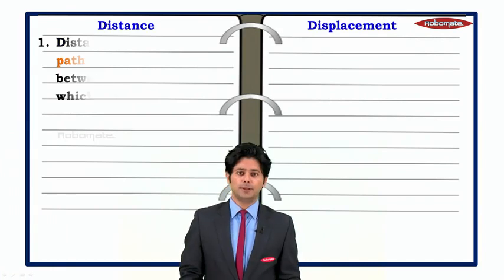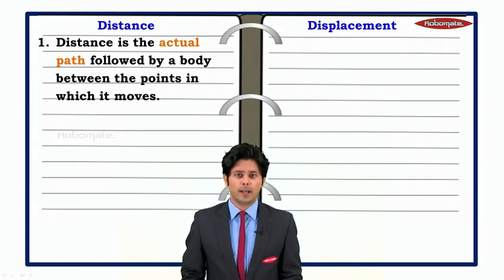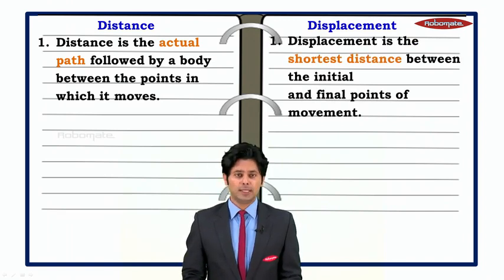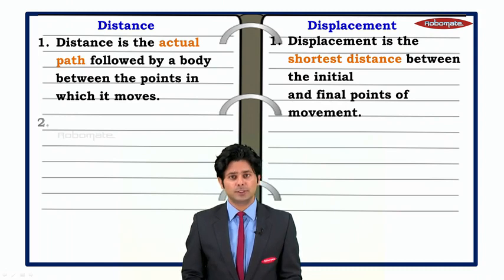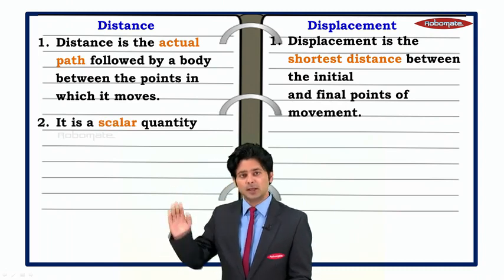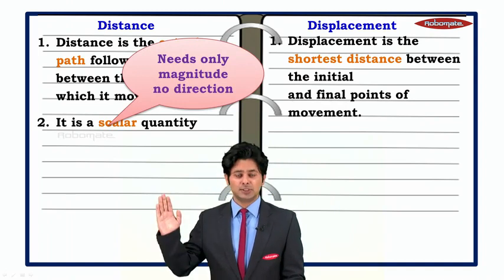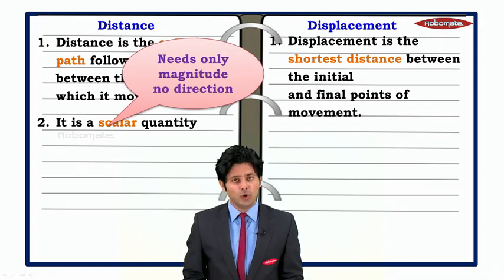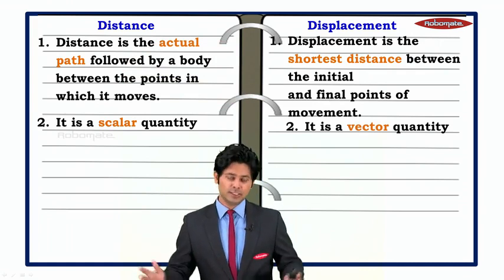Now let's distinguish between distance and displacement. First, distance is the actual path followed by a body between the points in which it moves, whereas displacement is the shortest distance between the initial and final point of movement. Distance is a scalar quantity because it has only magnitude and no direction.